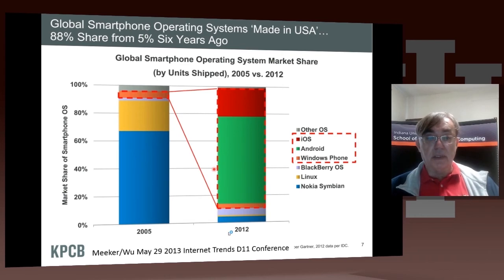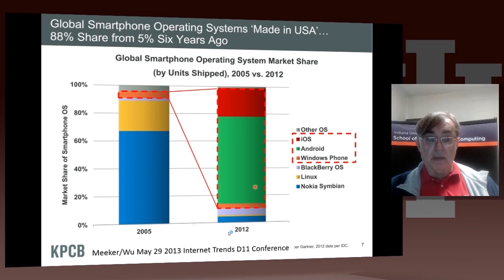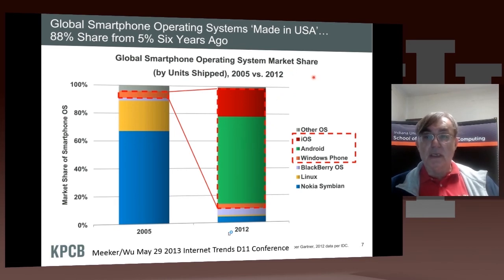Here's an interesting comment on the change in mobile phone operating systems. The dominant operating systems — Apple, Android, and Windows — are now a huge fraction of the total, almost 88% of the smartphone market. That's an interesting change, because it used to be just 5%. So the US operating systems now dominate 88% of the smartphone market.